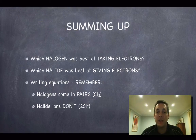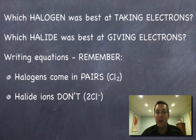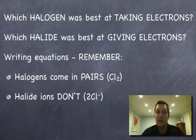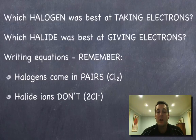Summing up what we've seen: which halogen was best at taking electrons from others? Chlorine water reacted with both potassium bromide and potassium iodide, so chlorine was the best at taking electrons — chlorine is the strongest oxidising agent of these three elements. Which one was best at giving away electrons? Iodide ions reacted with both bromine water and chlorine water, so iodide was best at giving away electrons, meaning iodine is the best reducing agent, or it's the most easily oxidised.